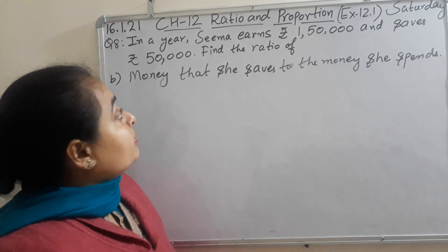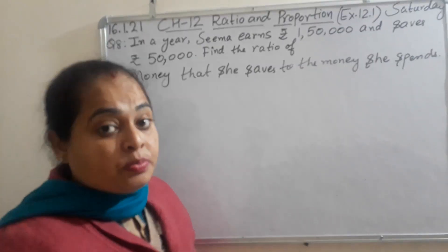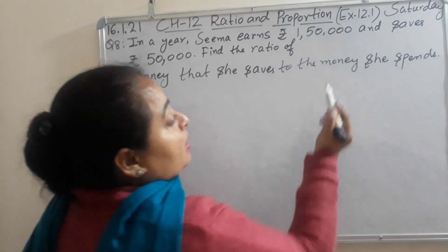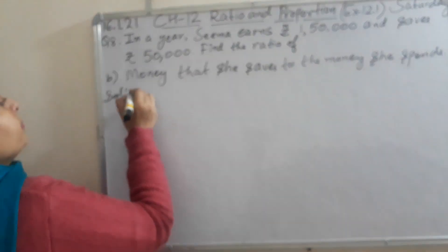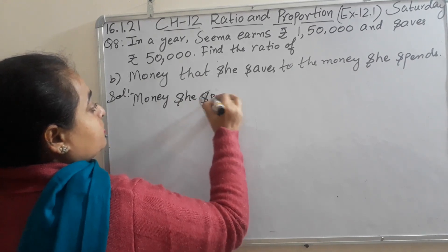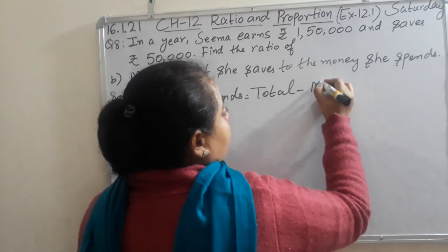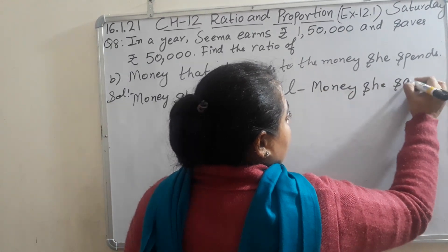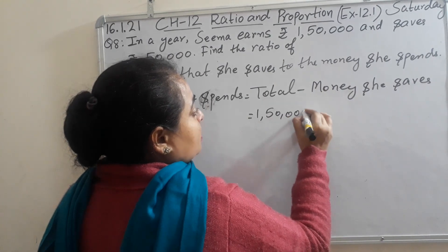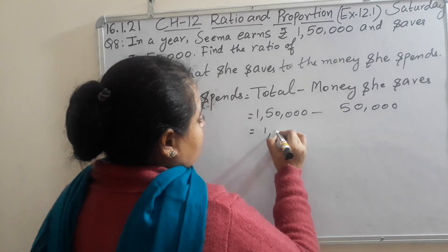Now come to Part B. Find the ratio of money that she saves to the money she spends. To solve this part, you need money she spends. Money she spends is equal to total minus money she saves. So, 1,50,000 minus 50,000. After subtraction, you will get 1,00,000.